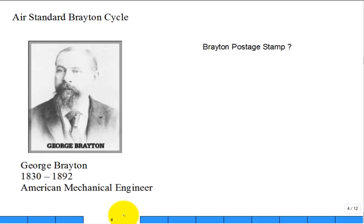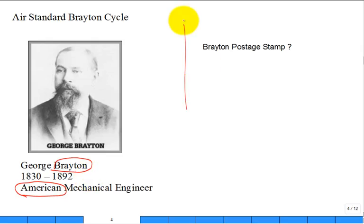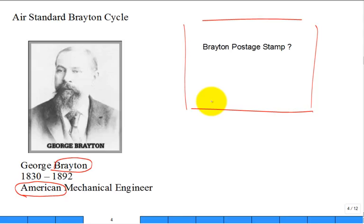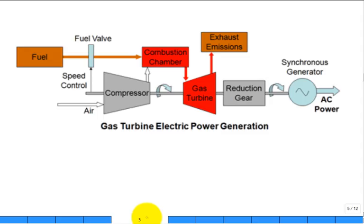Now we go to the Brayton cycle. This American engineer contributed to the development of thermodynamics and is honored by having a cycle named after him. The modern-day implementation looks very different from what he actually developed. He was a mechanical engineer in the Boston area, producing small power plants that people could purchase. We're still waiting for a Brayton postage stamp — they've honored everybody else, but not yet this American engineer.